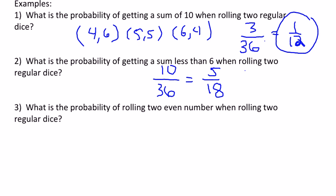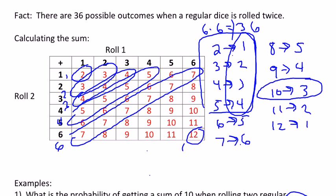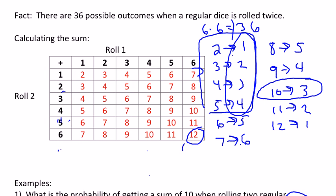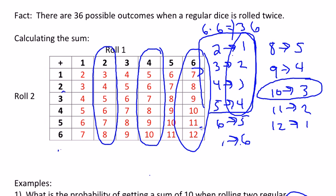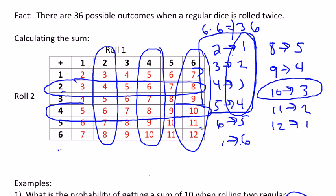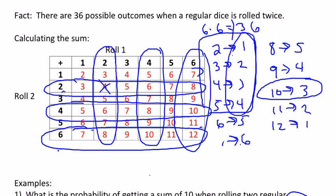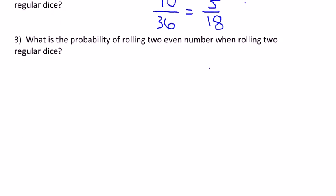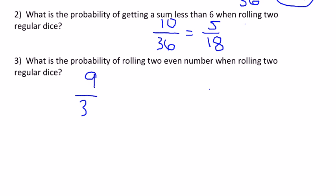The last example is the probability of rolling two even numbers. Looking at the chart, we identify the columns for even results on roll one — two, four, and six — and the same for roll two. Where those intersect are all the places where both numbers rolled are even. There are nine such outcomes. So it's nine out of 36, which is one-fourth. Alternatively, using counting theory, there are three even numbers, so three times three equals nine ways to roll two even numbers.